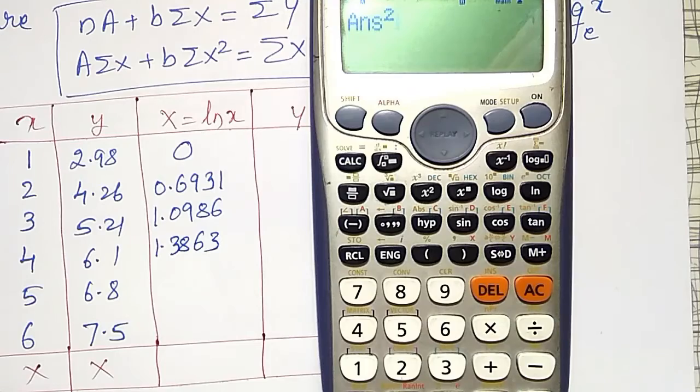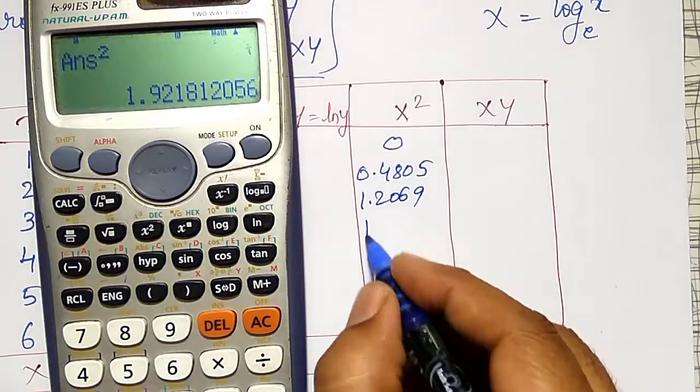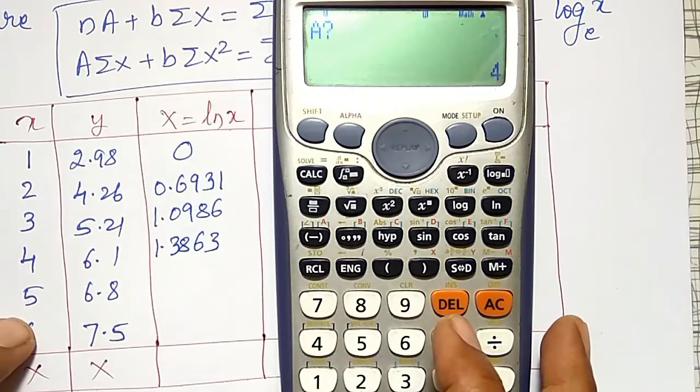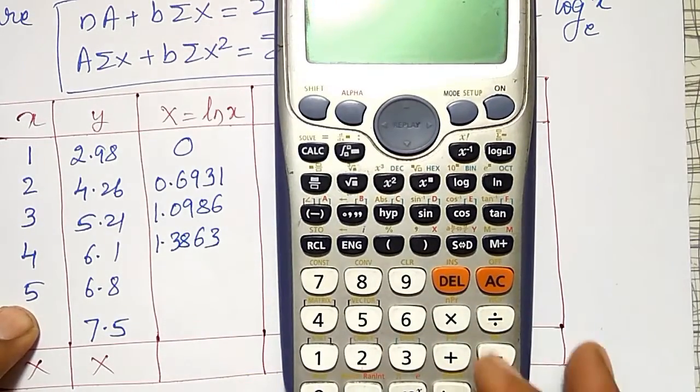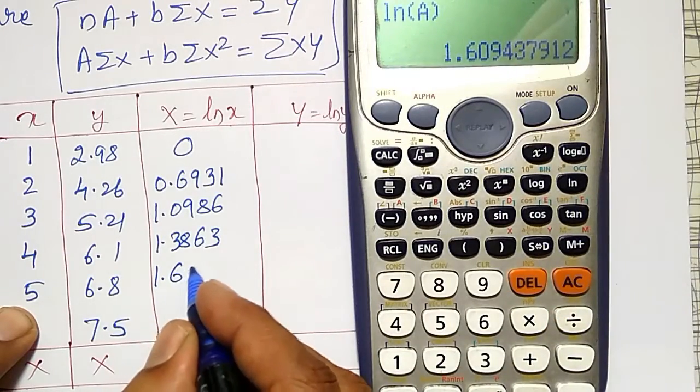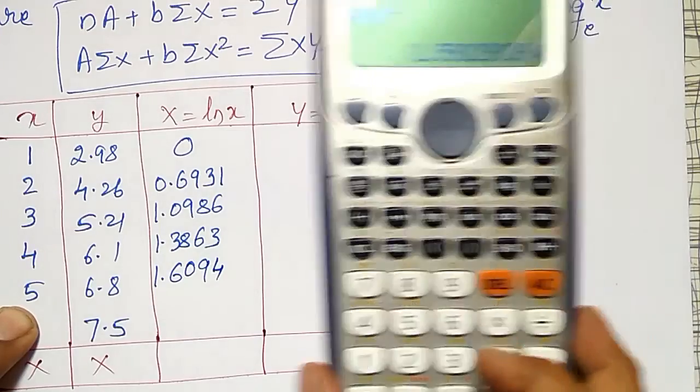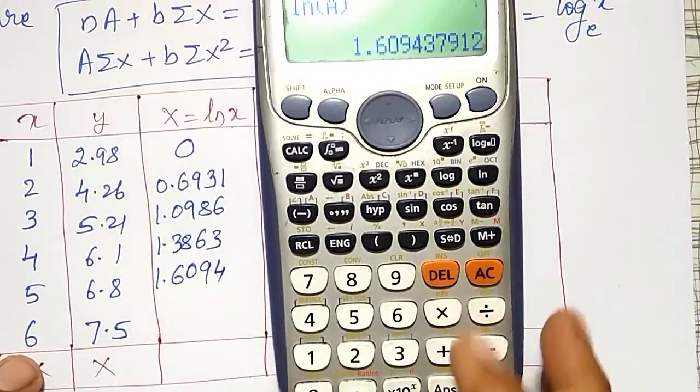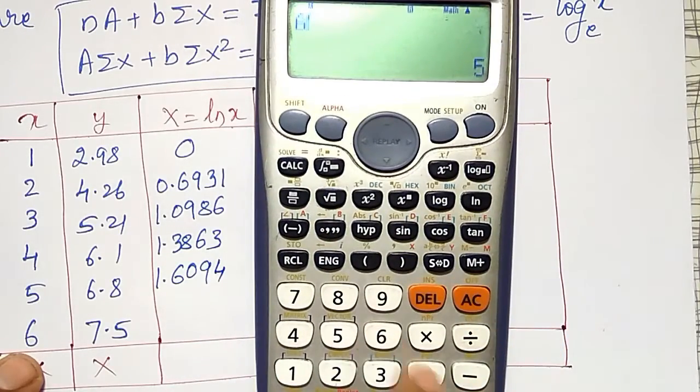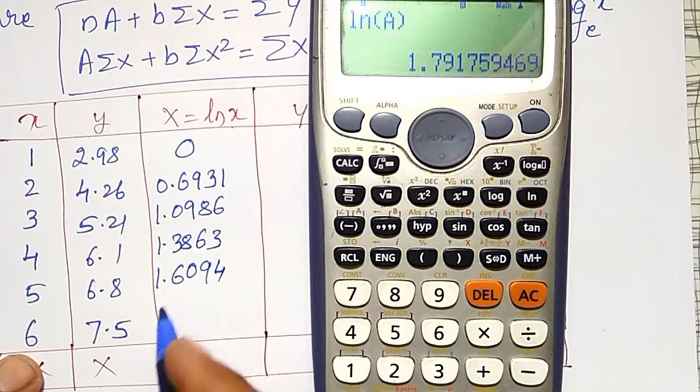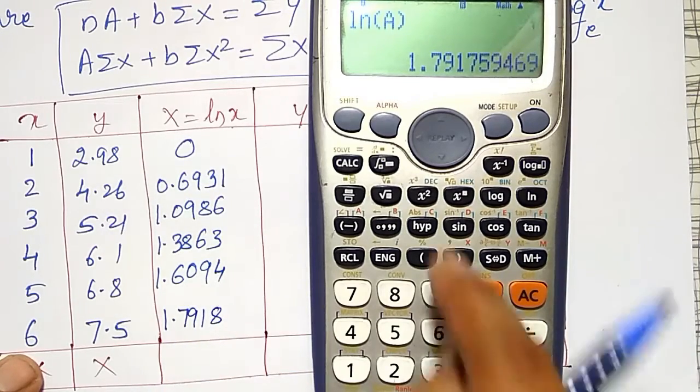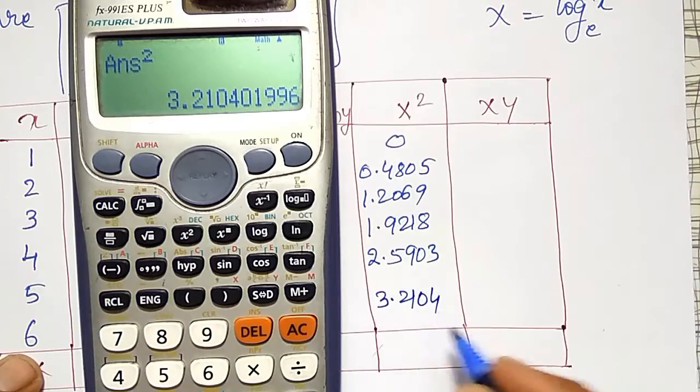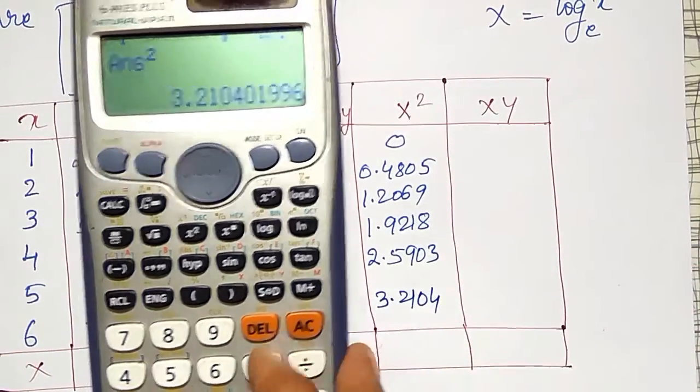And its square equal to 1.9218. Again ln of a, calc option, my next a value is 5, equal to 1.6094. And its square I am getting 2.5903. And then again ln of 6, calc option, ln of 6 equal to 1.7918. And its square I can write as 3.2104. These are the x square column also I have prepared.